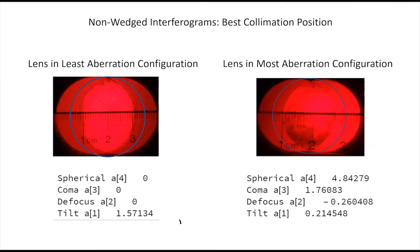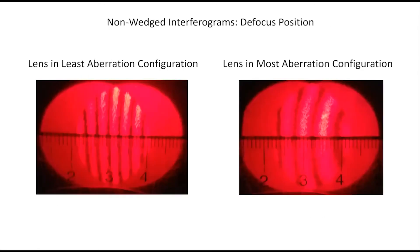Applying this to the best collimation position for either lens orientation yielded the aberrations present in each wavefront. The remaining positions of the lens were tested and processed using the same method. The defocus position should yield straight vertical fringes with only defocus present. A qualitative assessment seems to indicate that there is more spherical present when the lens is oriented in the position inducing more aberration, which is supported by the processed data.